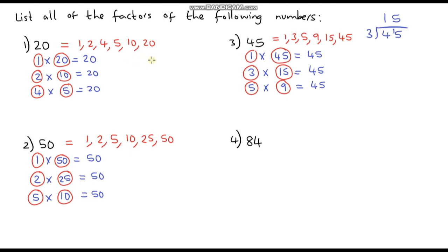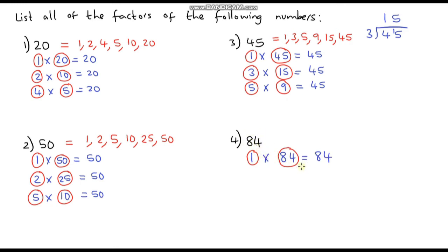You might be wondering: are there 6 factors in every single number? No, that is just purely coincidence so far. Let's look at 84. So 1 times 84 is 84. 2 is also a factor because 84 is even, and to work out the factor pair I can just halve 84, which is 42. So 2 times 42 is 84.